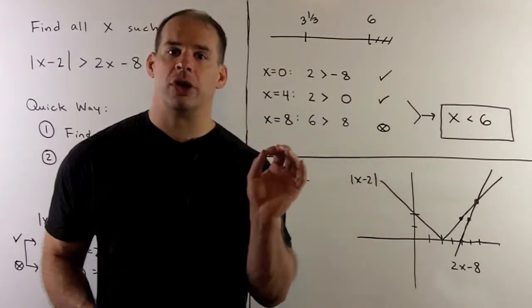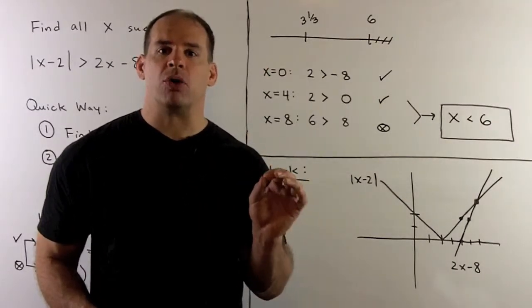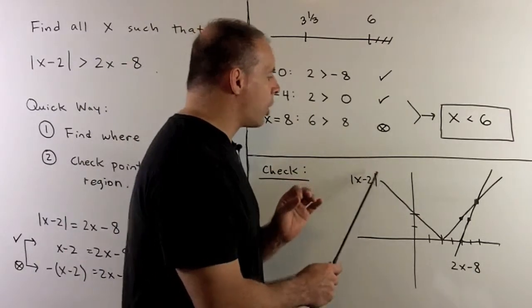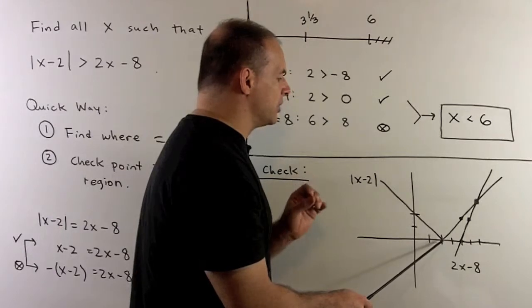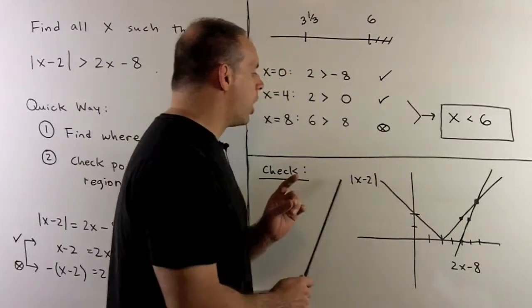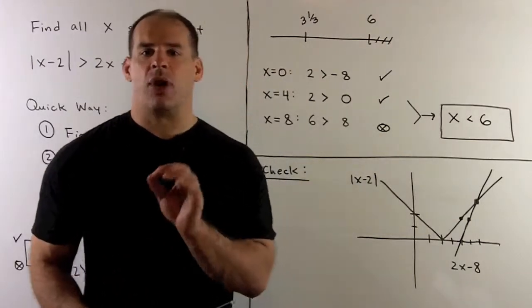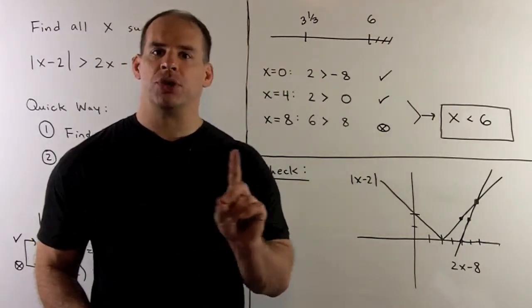Our first check is just to look at the graphs. If I graph the absolute value of x minus 2, we're going to have our v, but it's going to be anchored at x equal to 2. Recall, having x minus 2 in the middle means take the graph of absolute value of x, shift to the right by 2.